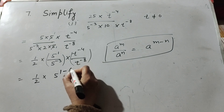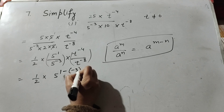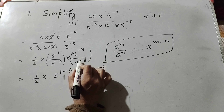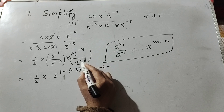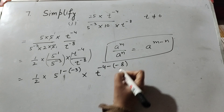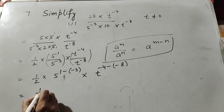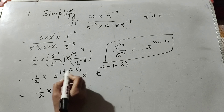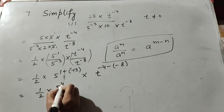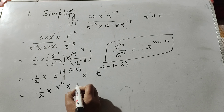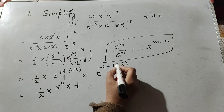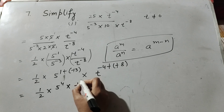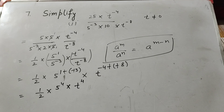m minus n, where n is minus 3. Into t raised to power minus 4 over t raised to power minus 8, that is minus 4 minus minus 8. The minus minus becomes plus, so 5 raised to power 4 into t raised to power minus 4 plus 8, which is minus 4 plus 8, giving t raised to power 4.